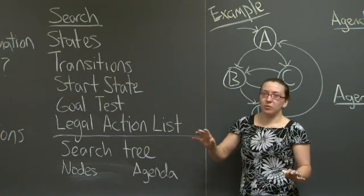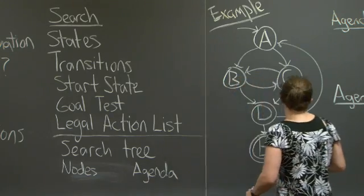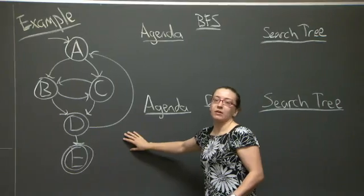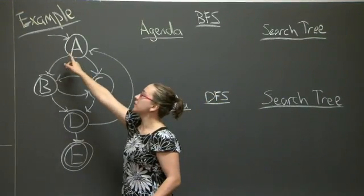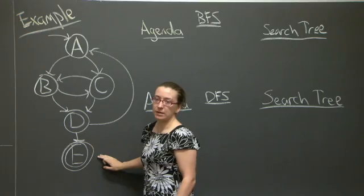That's a lot of information. At this point, I'm going to go over an example. We're going to search the state transition diagram. We're going to start at A. And our goal test would be whether or not our state was equal to E.